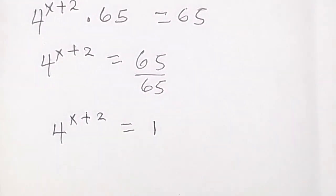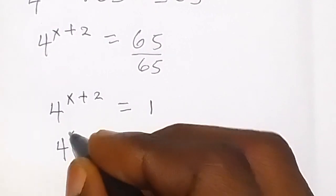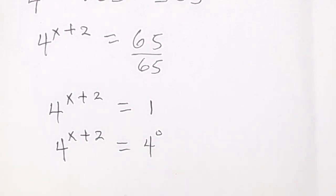1 can be written in base 4 as well, and that will be 4 raised to power 0. That's 4 raised to power x plus 2 equals to 4 raised to power 0.